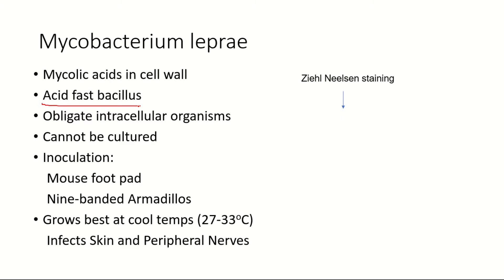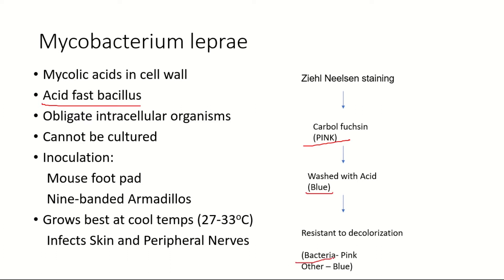...the Ziehl-Neelsen staining contains a chemical called carbol fuchsin. This chemical will stain the entire specimen pink. When you then wash that specimen with acid, everything will be colored blue except the bacteria — only the Mycobacterium will appear pink because they are resistant to decolorization by acids, whereas fibrous tissues, tissue cells, or other bacteria present will be decolorized.